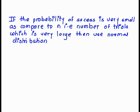If the probability of success is very small as compared to n, the number of trials which is very large, then we use a normal distribution. For a normal distribution there is directly a table value we have for the probability. The only thing we have to do is convert this x into z.